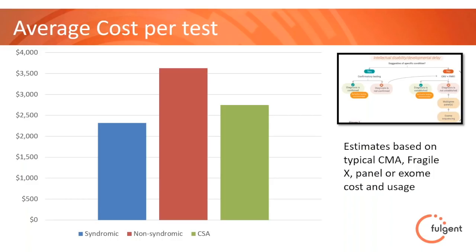We've tried to make this a test that's appealing for idiopathic cases that don't look like any specific syndrome. If you see the patient and it doesn't ring any bells from Smith, or it's an atypical case of any kind, you can go straight to CSA, which is a more cost-effective approach. The other area is for very young patients — NICU or less than a year old — where you don't know what symptoms they may develop in the next couple of years, but something is wrong now. You might as well go for the big test and get everything rather than doing iterative testing, which takes time and extra resources.